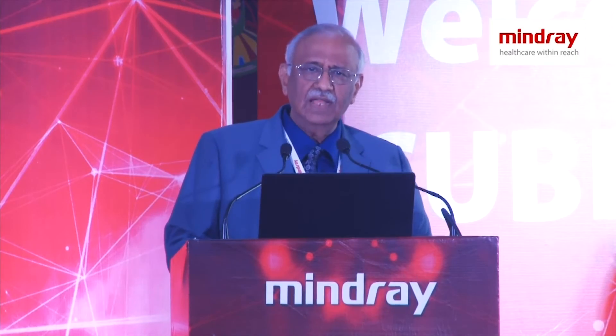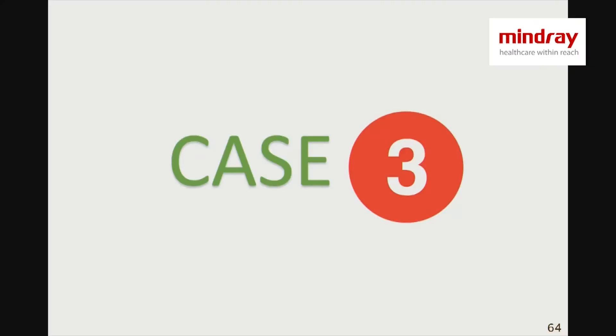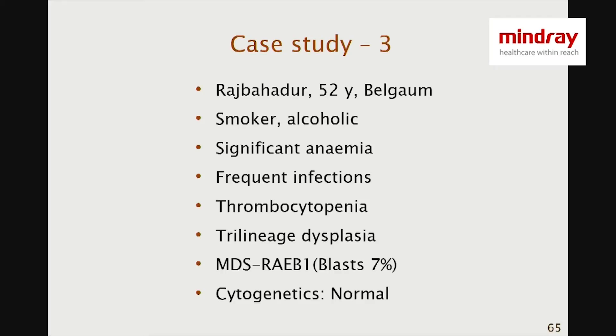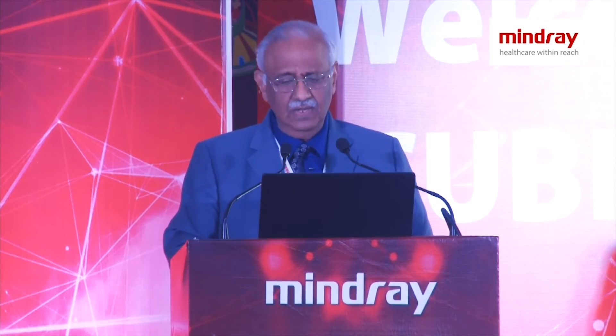We move on to the last case of the day — a relatively young patient, Mr. Raj Bahadur from Belgaon, aged 52. He enjoyed his life with smoking and alcohol but has now developed significant anemia, gets frequent infections, and is thrombocytopenic. Marrow shows trilineage dysplasia. His marrow showed MDS-RAEB1 because there were 7% blasts. His karyotyping was normal.